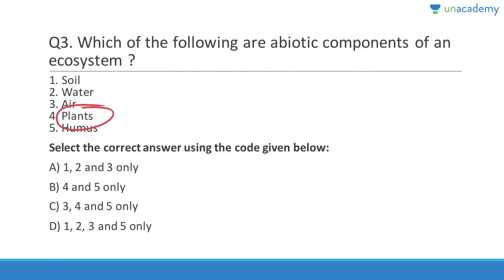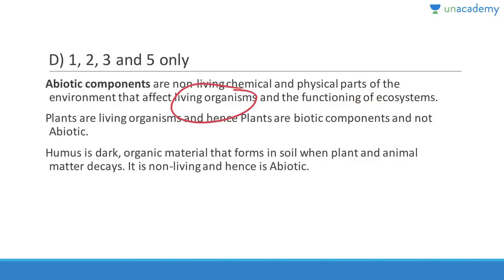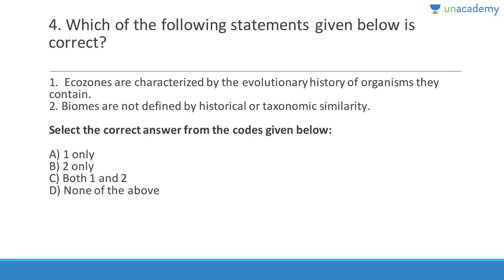The answer is D. Abiotic components are the non-living chemical and physical parts of the environment that affect living organisms and the functioning of ecosystems. Plants are living so they are not abiotic. Humus is dark organic material which is non-living and hence it is abiotic.